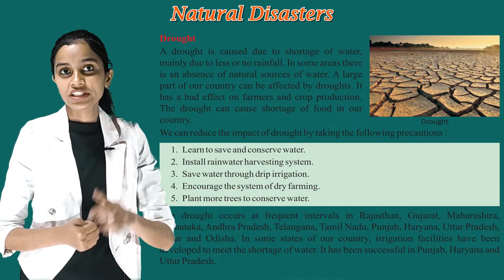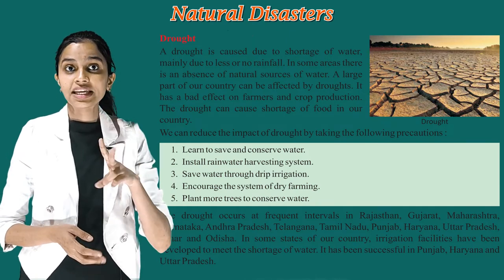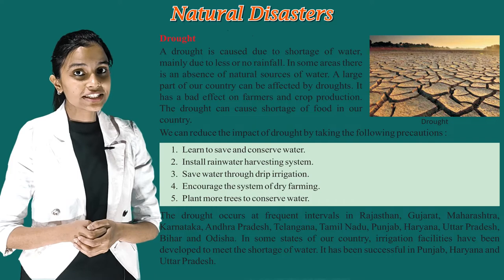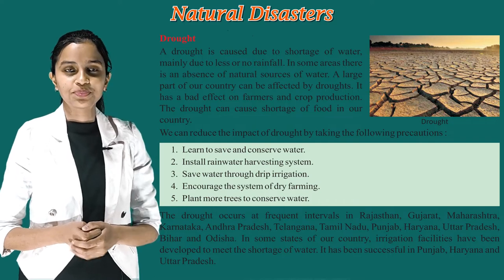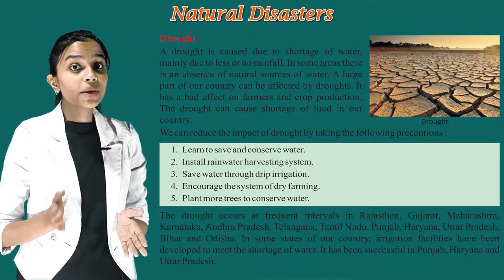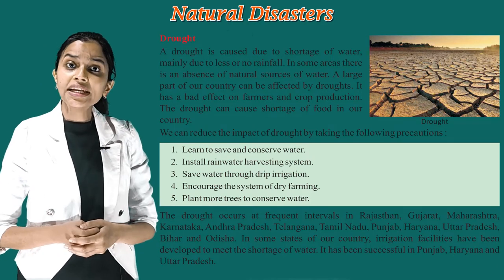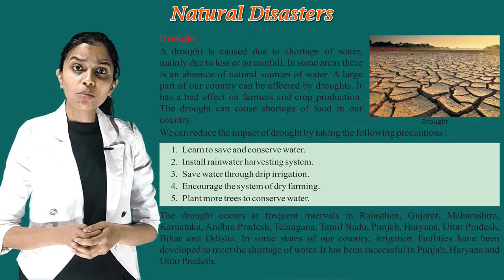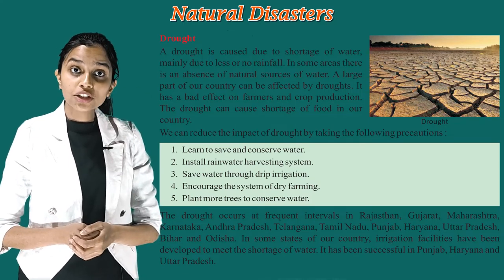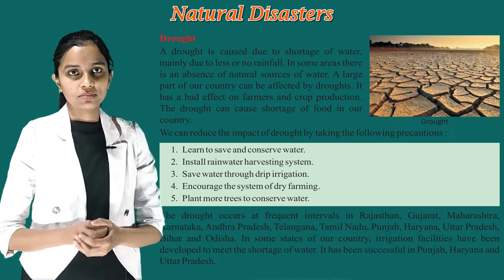We can reduce the impact of drought by taking the following precautions. First, learn to save and conserve water. Second, install a rainwater harvesting system. Third, save water through drip irrigation. Fourth, encourage the system of dry farming. Fifth, plant more trees to conserve water.